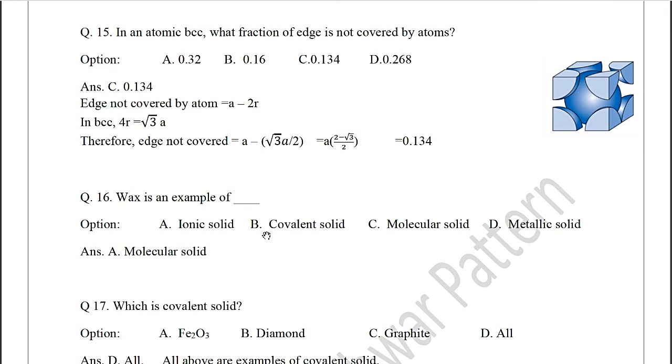Question 15: In an atomic density, what fraction of edge is not covered by atoms? And options are 0.32, 0.16, 0.134, 0.268. And the correct option is C, 0.134. Let's see how that came.